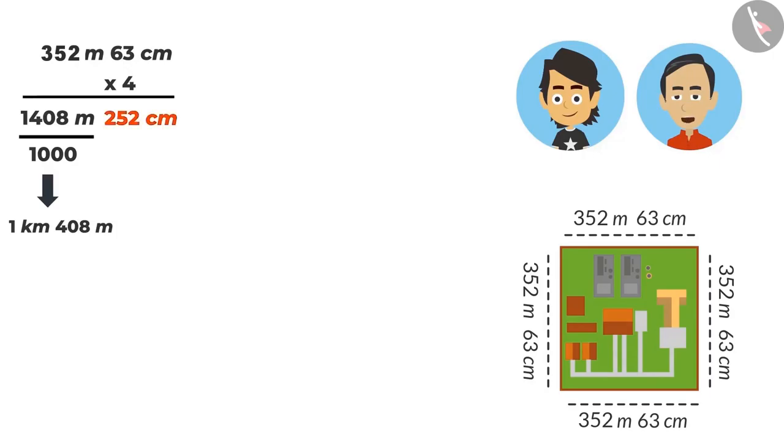But Ayushman, the value in centimetres is also more than 100. Don't you think it can be written in metres too? Oh yes, it can be written. Then what are you thinking? Write it down. To convert the value in centimetres to metres, one has to divide it by 100. And 252 divided by 100 will be 2 metres, 52 centimetres.